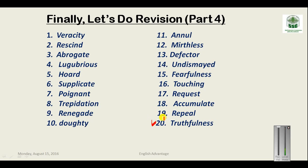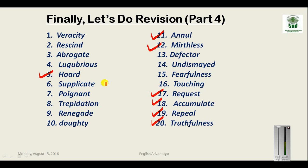Part four of revision: Veracity means truthfulness. Rescind means to repeal or cancel something. Abrogate also means to cancel or annul something. Lugubrious means very, very sad. Hoard means to collect or accumulate. Supplicate means to request. Poignant means very touching. Some words here have been taken from the previous video tutorial — you should also watch parts one, two, and three of this video series before watching this tutorial.